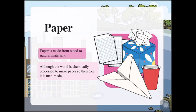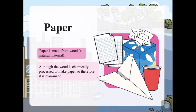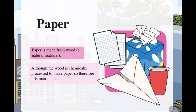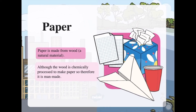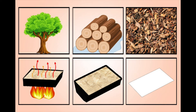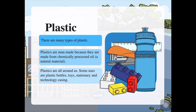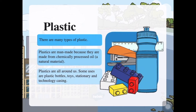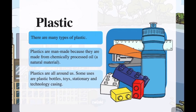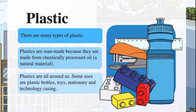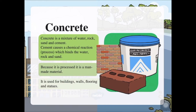Paper is our first example of a man-made material. Paper is made from wood — it is a natural material. People take the natural material and go through some chemical processes to make paper. If you want to know what processes it takes to make paper from wood, I think you should go search for it! Our second example of a man-made material is plastic. There are many types of plastic. Plastics are man-made because they are made from chemically processed oil. Oil is a natural material.